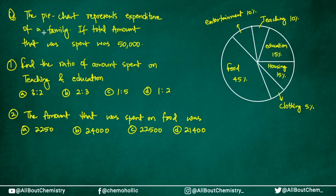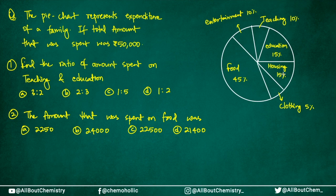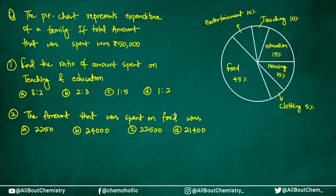50,000 rupees is the total amount they are spending. Out of that, 45% is spent on food, 5% on clothing, 15% on housing, 15% on education, 10% on teaching, and 10% on entertainment. Question one: find the ratio of amount spent on teaching and education. Question two: what was the amount spent on food? I've given you enough ways of solving it — I believe all of you will be able to solve it correctly. I'll be looking at your answers in the comment section below.